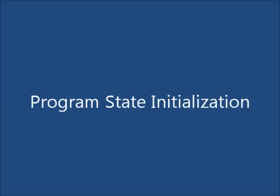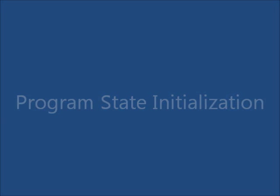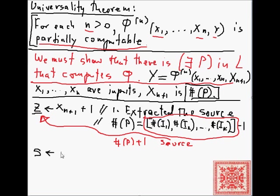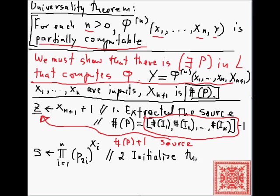Now that we've extracted the source code, the next step that the operating system U_n does is initialize the program state. S is a variable we've added to our language L — it's a Gödel number, the product of the primes in even places: the first prime, the second prime, the third prime, and so forth. We've initialized the program state, which keeps track of all variables used by the program: the input variables, the internal variables, and the first variable in the state is Y.